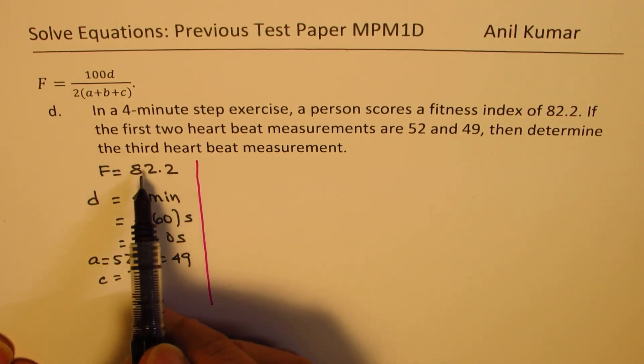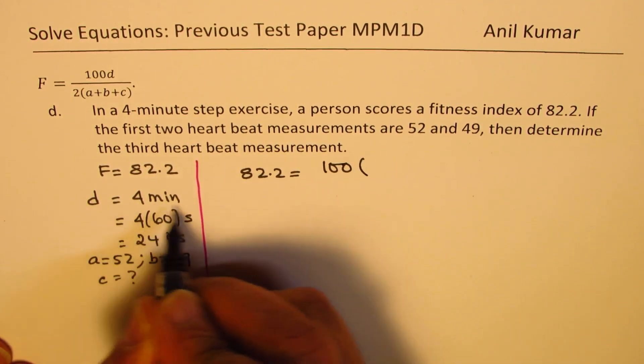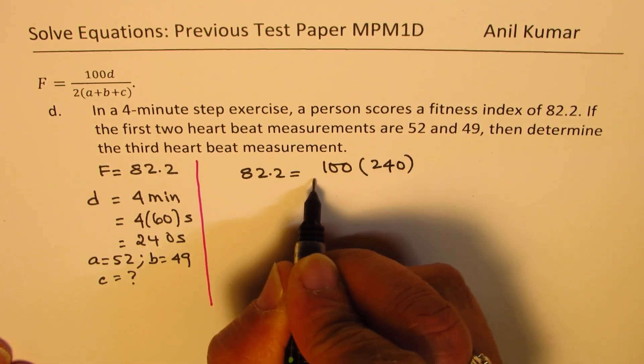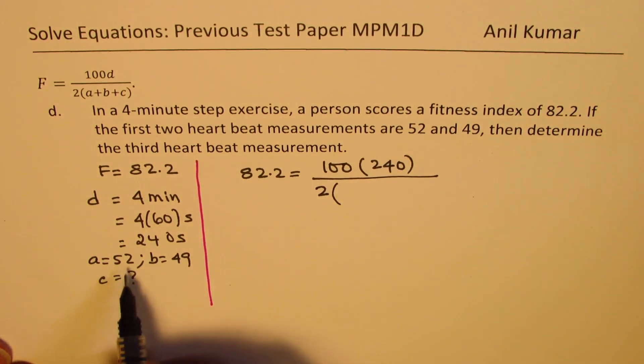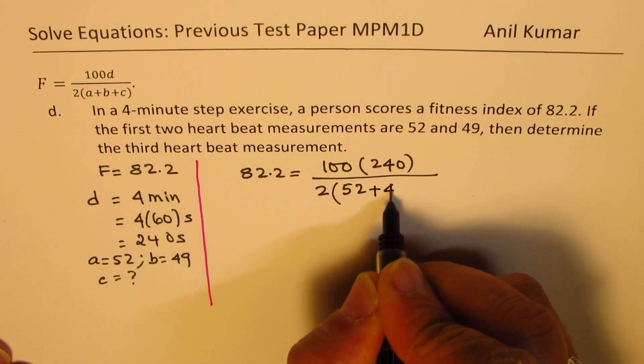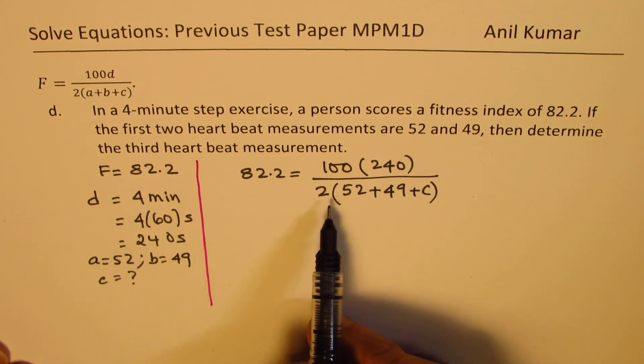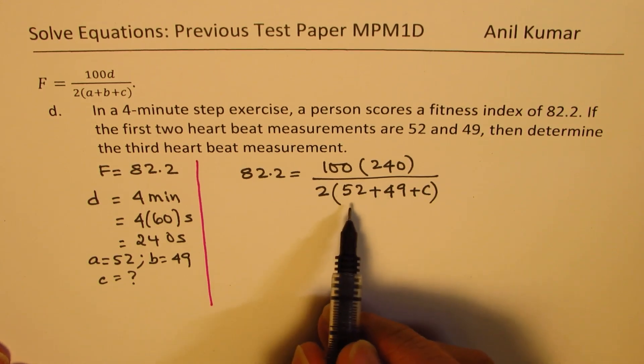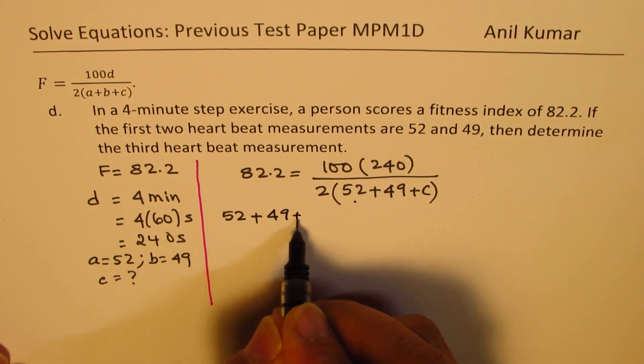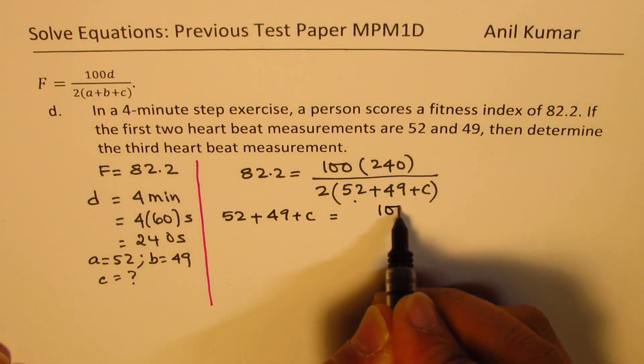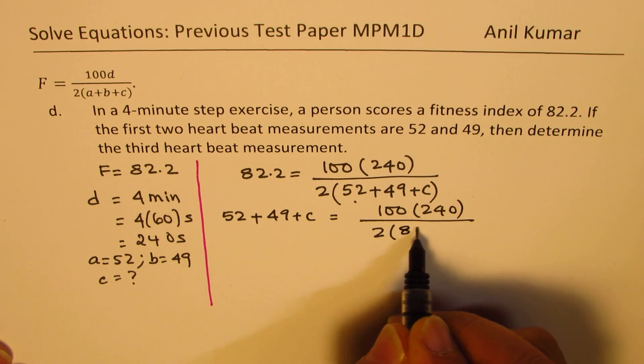Well, let's substitute these values. So we get 82.2 equals 100 times 240 divided by 2 times (A plus B plus C). Now A is 52, B is 49 plus C. C we need to find. Now we can actually cross multiply taking these terms to the left side. So we get 52 plus 49 plus C equals 100 times 240 divided by 2 times 82.2.